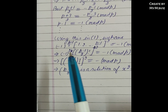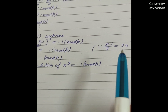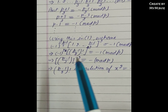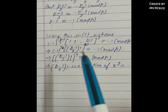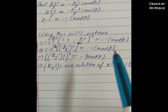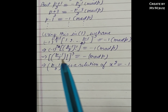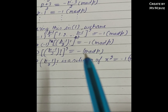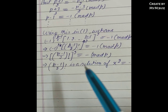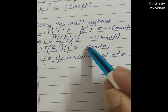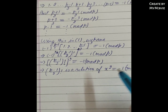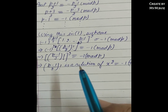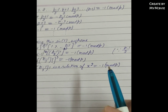Since p-1 = 4k, we have (-1)^(2k) = 1, so [((p-1)/2)!]² ≡ -1 (mod p). This implies ((p-1)/2)! is a solution of x² ≡ -1 (mod p).